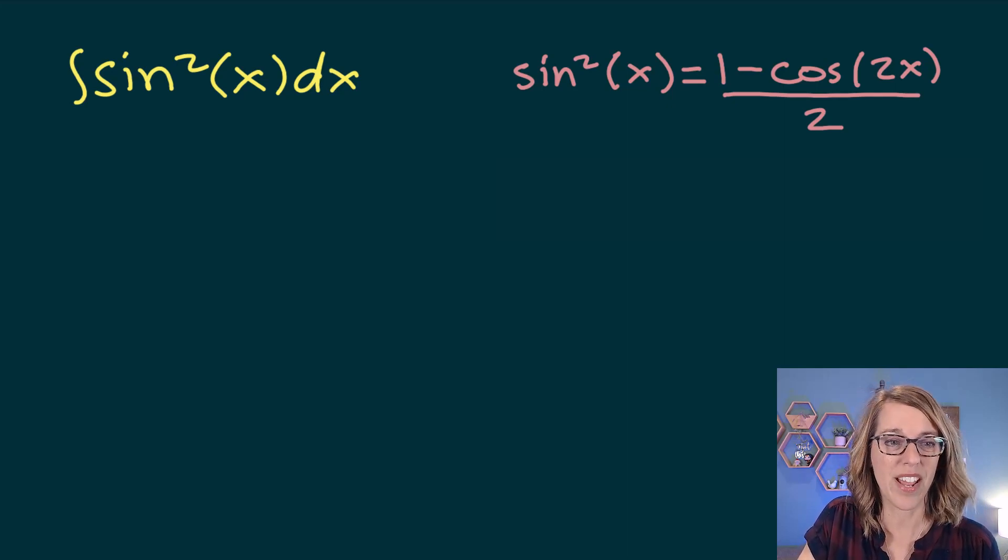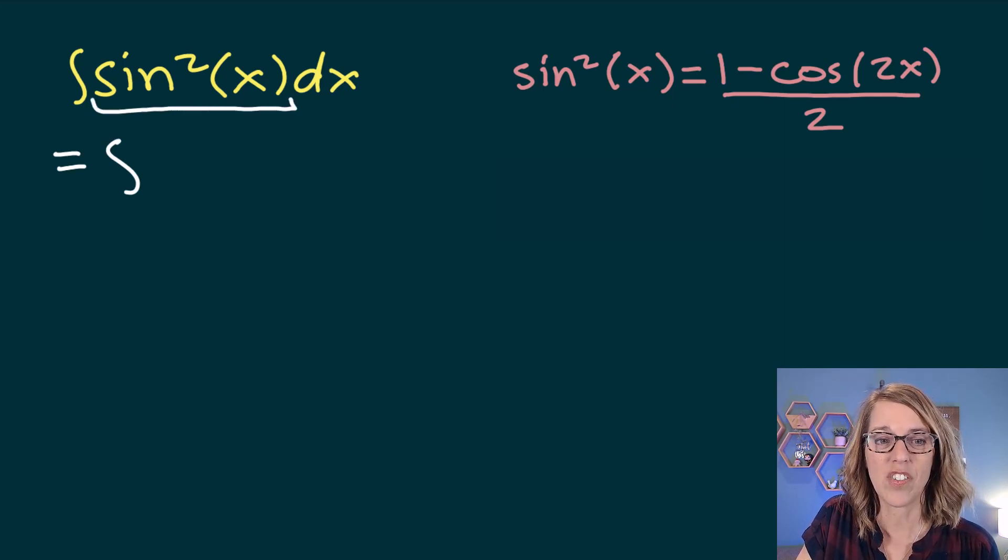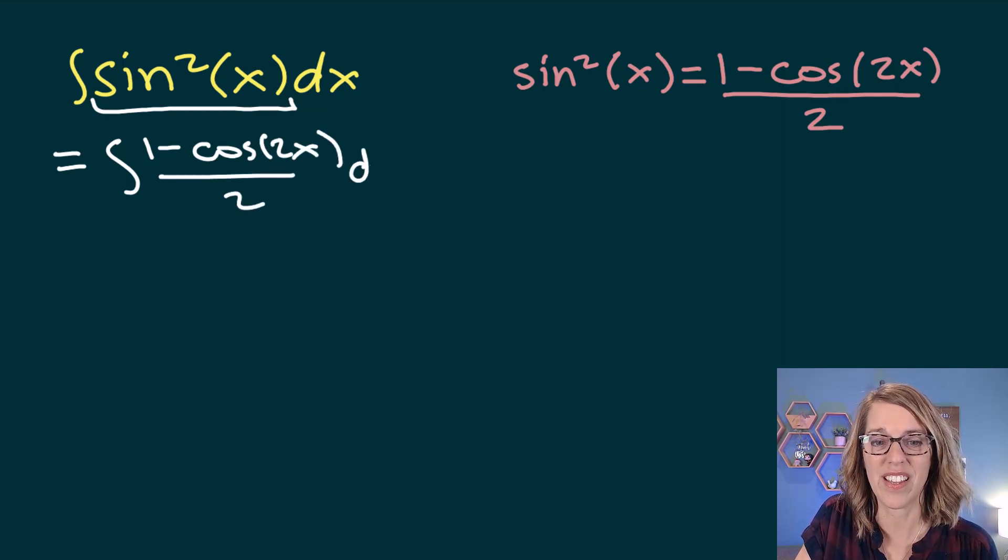But let's go ahead and put this sine squared identity in, and this changes our integral. I'm just going to replace the sine squared x. It changes my integral to be 1 minus cosine 2x, all divided by 2, and then a dx.